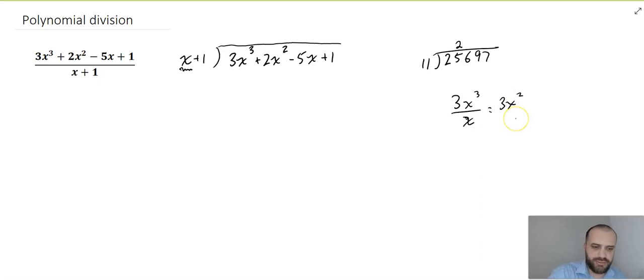So, we write the answer, 3x squared, up here. Now, once you're used to this, it gets a lot faster. 3x cubed divided by x is 3x squared. Alright, and then we do this. This times this, so 3x squared times x is 3x cubed. And then we do it again with that next one, 3x squared times 1, which is 3x squared.